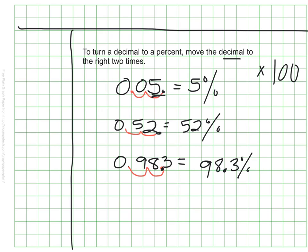Sometimes I might have something that's more than 100%. So if I have 1 and 64 hundredths, and I do my same process to signify multiplying by 100, my decimal lands right there, which makes this 164% — more than 100%.